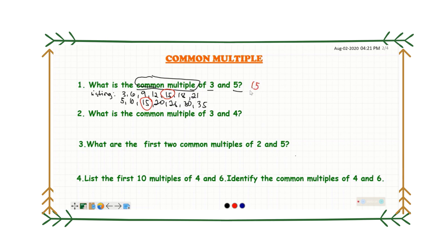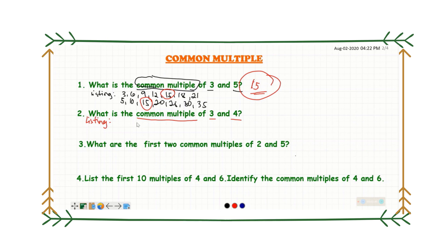Because of that, we can say that the common multiple of three and five is fifteen. This is not the only common multiple of three and five, but this is the first common multiple — it's fifteen. Next, what if we want to know the common multiple of three and four? We'll do listing by skip counting again. We already have the multiples of three: three, six, nine, twelve, fifteen, eighteen, and twenty-one.